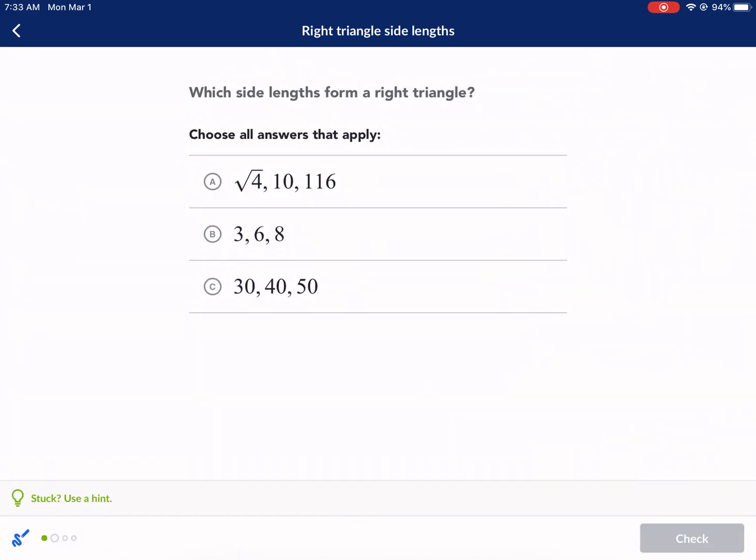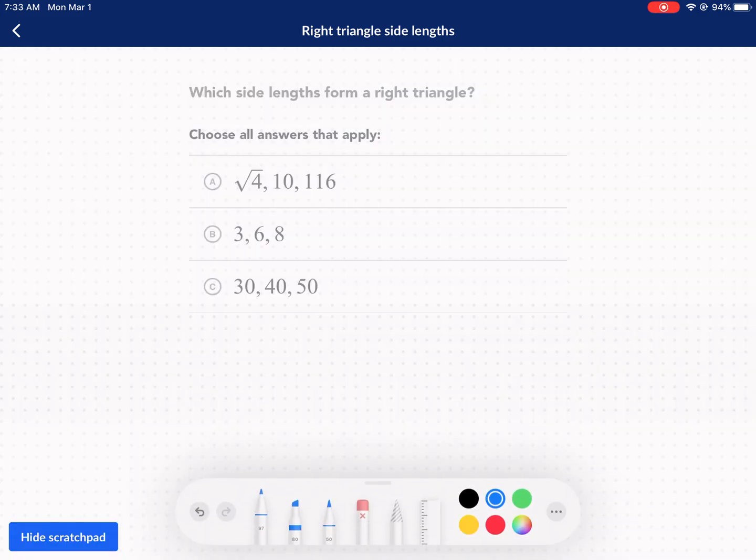All right, next one. Again, same deal. So we're just going to square each one of these. And we're going to see here that if you square these three, they're just multiples of the same three, four, five. That's an automatic triangle. So it's going to be C.